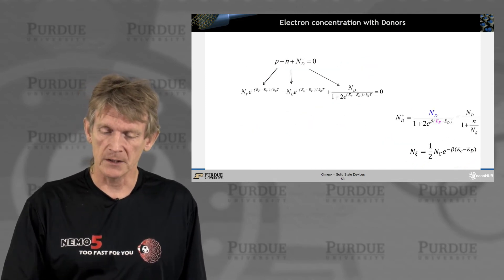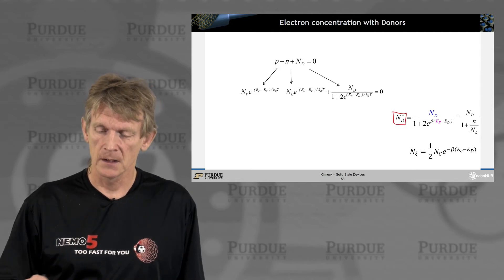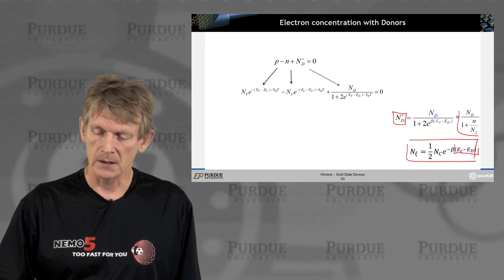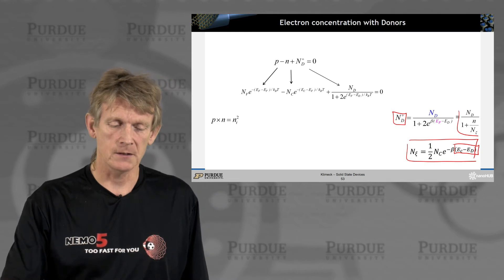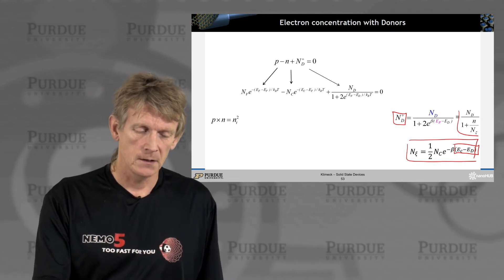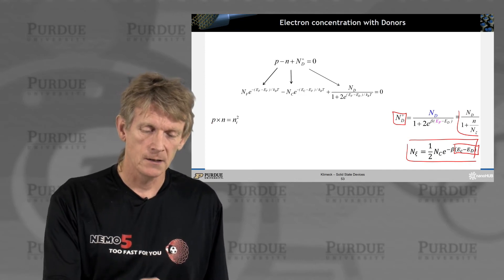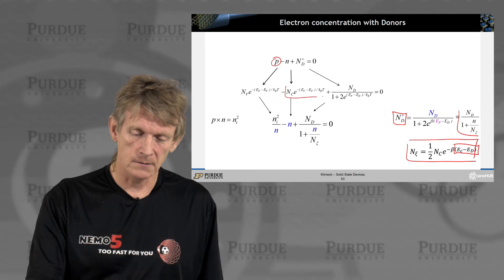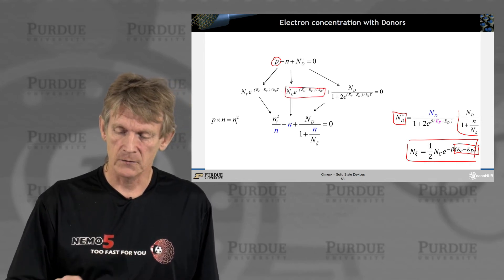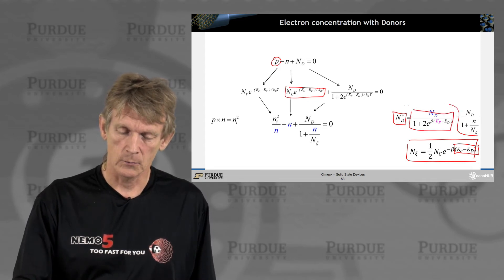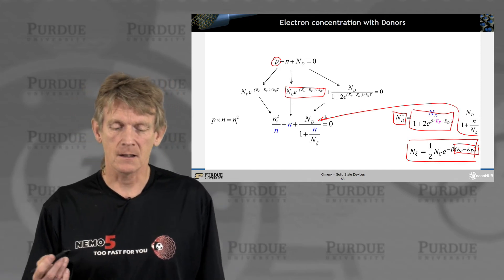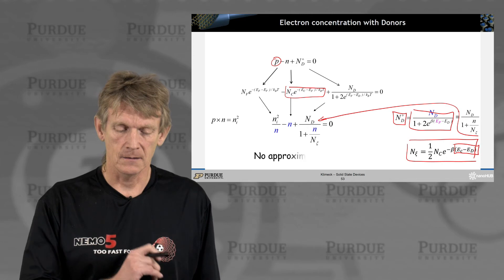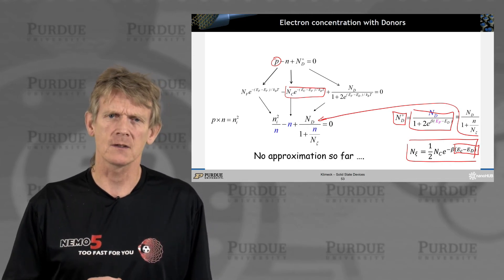All right. So we have these expressions now for the donor, ionized donor expression over here, with a new funny looking expression like this that depends solely on Ec minus Ed. So now let's begin to plug those expressions in. We know that the product of P times n is ni squared. So we can express P here as ni squared over n. We know this is just n, translates back down here. And then here is the expression for the ionized donors. This guy here being plugged in here. So again, nothing fancy going on. But now we just have an expression that has n and the n psi in it. So no approximation so far. All we've done is shuffling some analytical symbols around, basically doing some algebra.